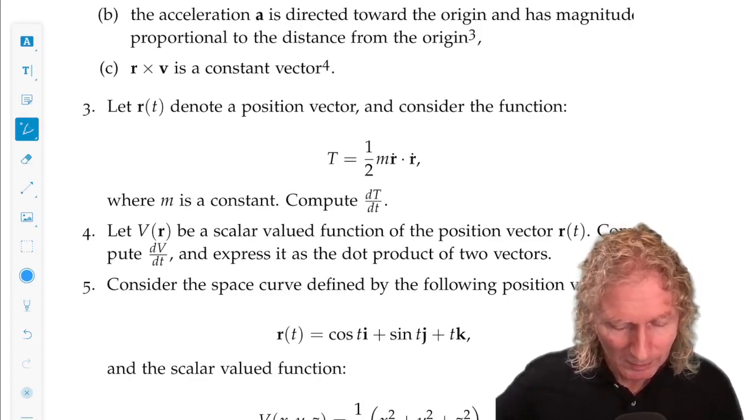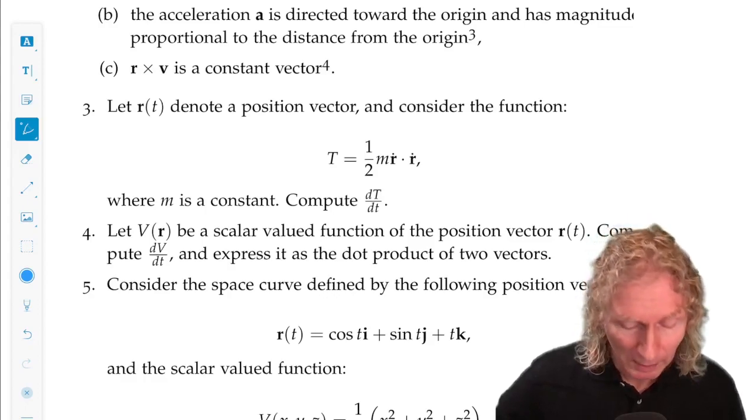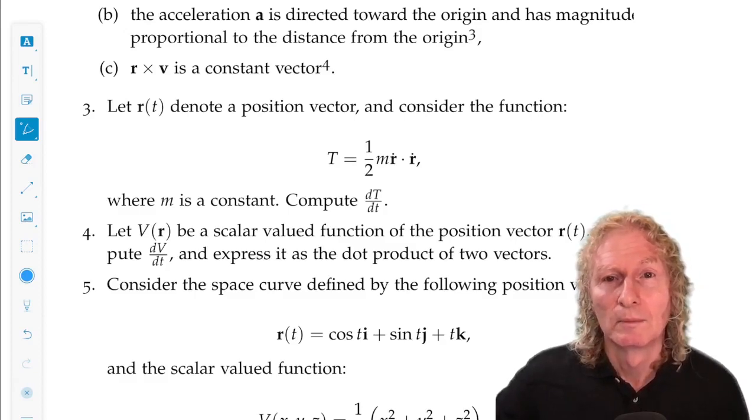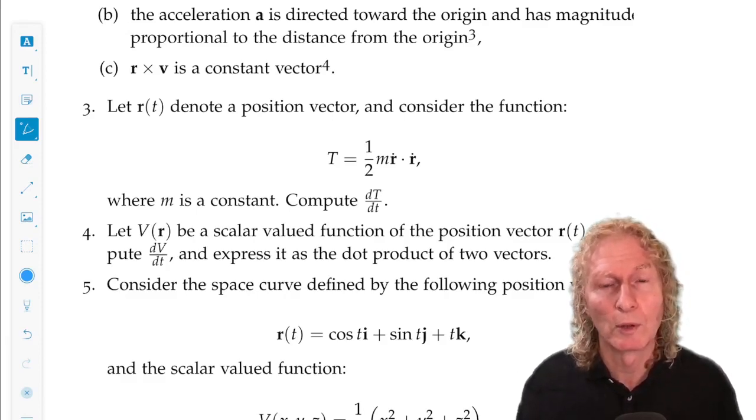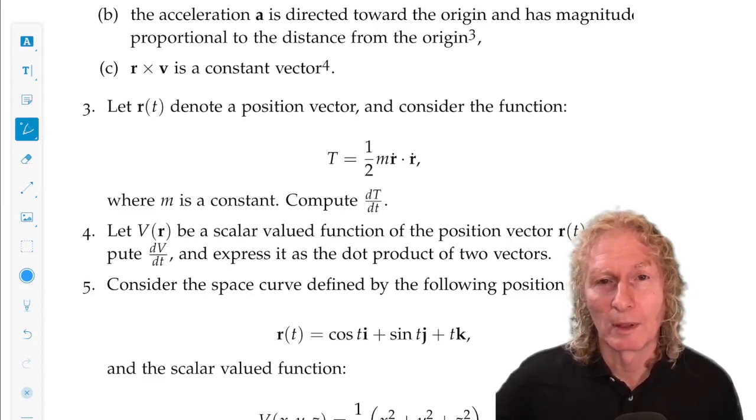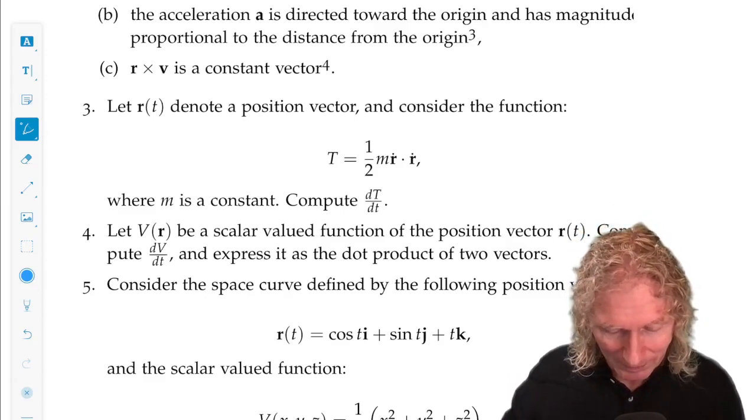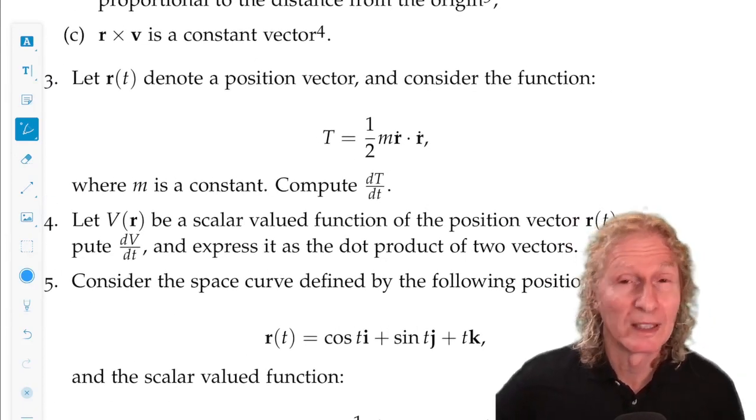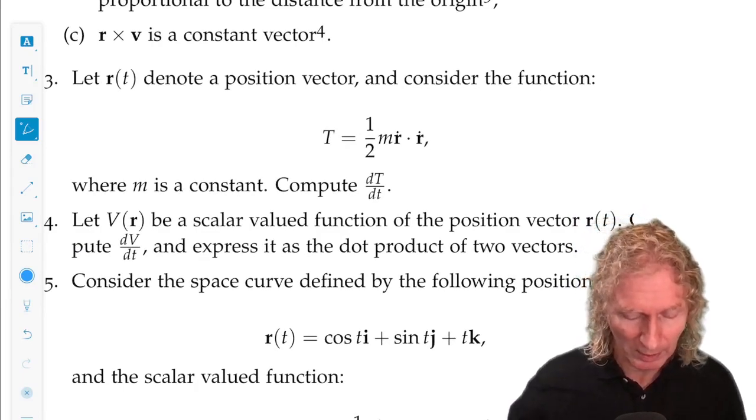Problem 3. Let R of t denote a position vector. And consider the function one half m, M is a constant, R dot dot r dot. And I want you to compute, so that's the right hand side is a scalar, I want you to compute the uppercase T with respect to lowercase t, dt dt. Just a little hint, later on you'll see that that has the form of the kinetic energy of a particle. And computing its time derivative is important in a lot of mechanical applications.